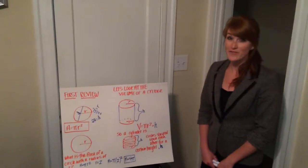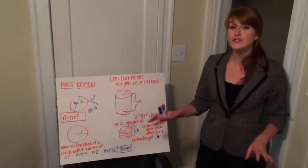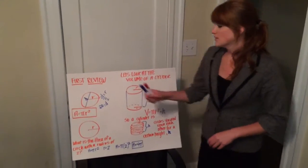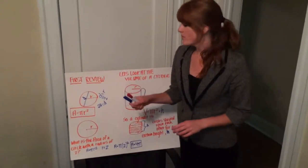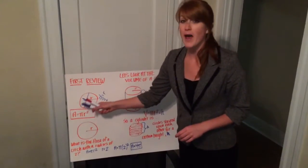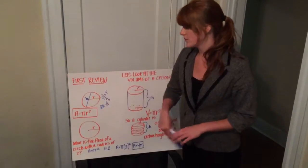Today we're going to be talking about the volume of cylinders. But first of all, let's review circles. Remember that the area of a circle is pi r squared, where r is the radius of your circle.